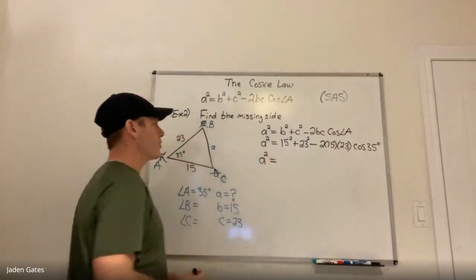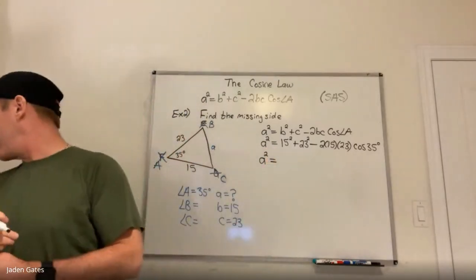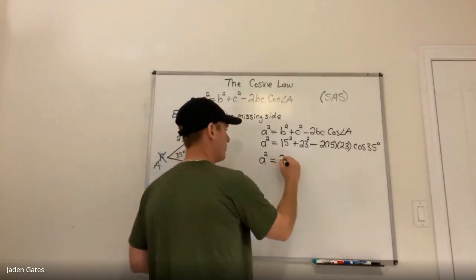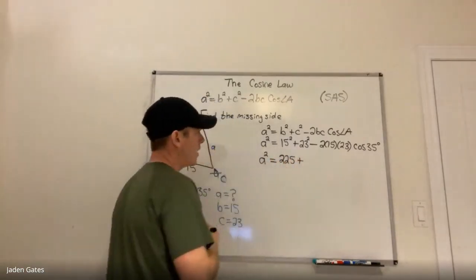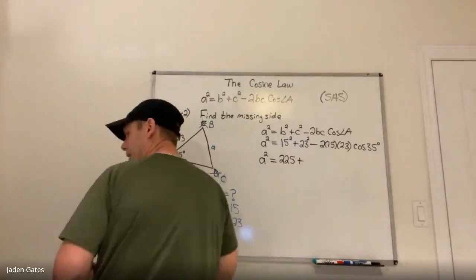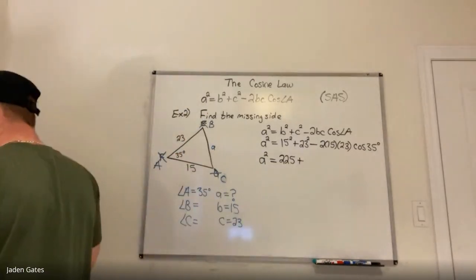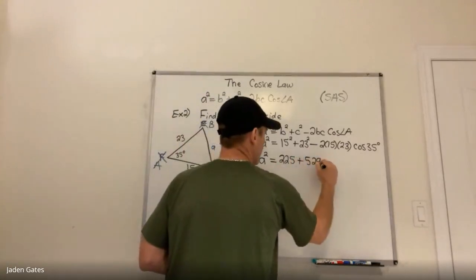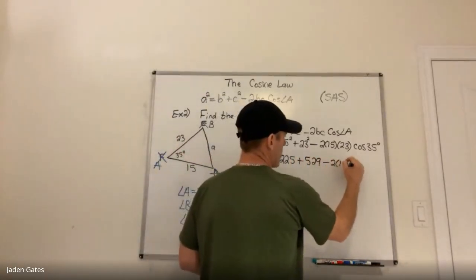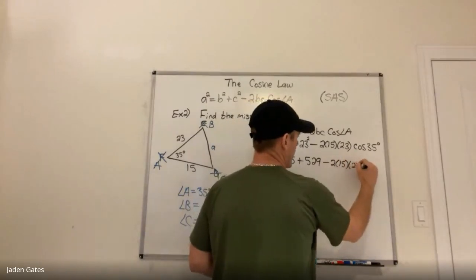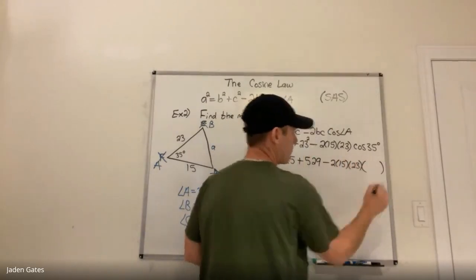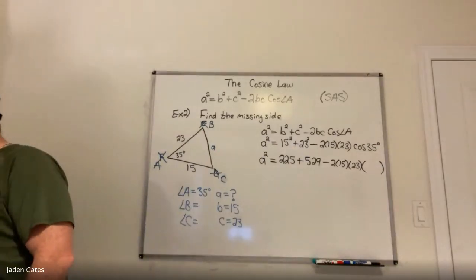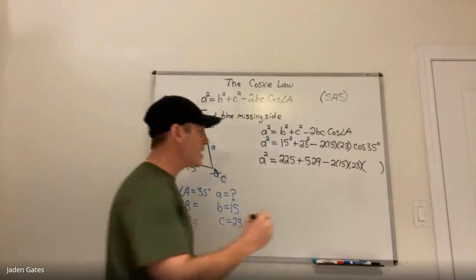Simplifying using BEDMAS, I do the exponents first. 15 squared is 225. 23 squared is 529. I can also change cos 35 degrees to a decimal — I get 0.82.